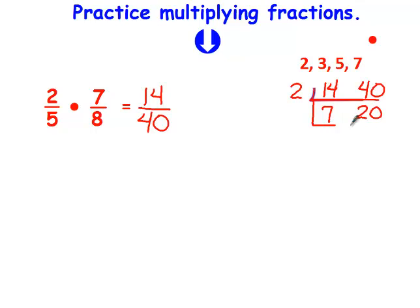I'm going to try it again. 2 can't go into it because they're not both even. 3 cannot go into 7 or 20. 5 won't work because they both don't end in a 5 or a 0. And 7 will go into 7, but it won't go into 20. So the answer to this problem is 7 twentieths.